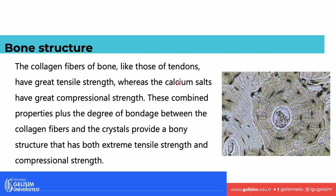These collagen fibers of bone — somewhat similar to tendons — give it tensile strength. Calcium salts have a lot of compressional strength. The collagen fiber has a lot of tensile strength, and the salts give it more compressional strength. The combination of those two things makes bone very, very strong.